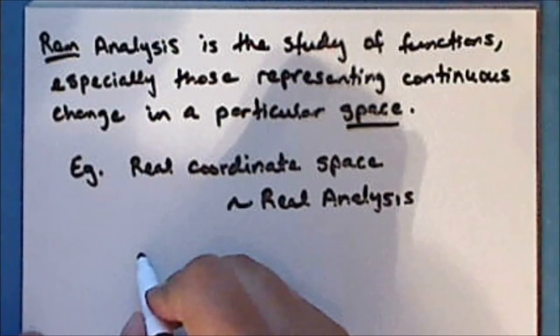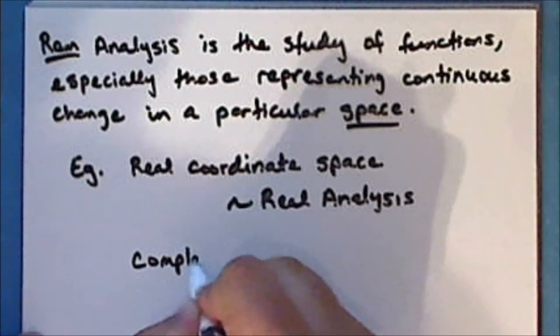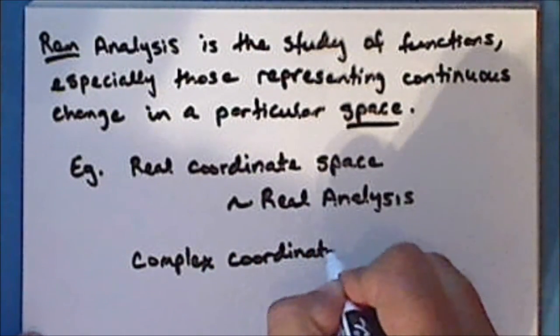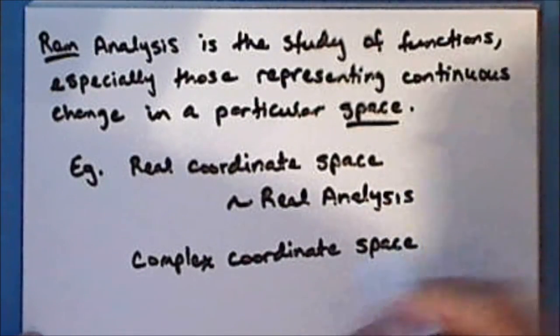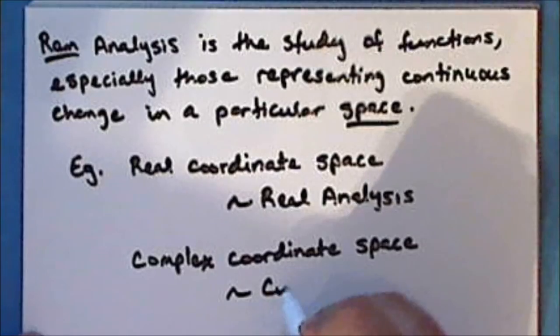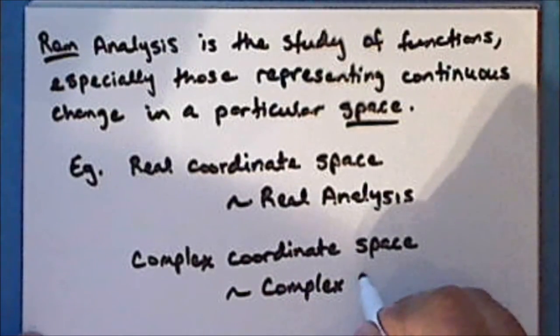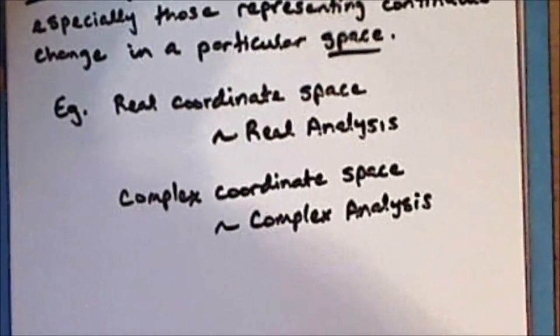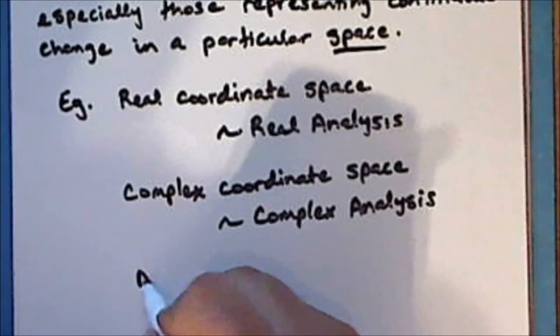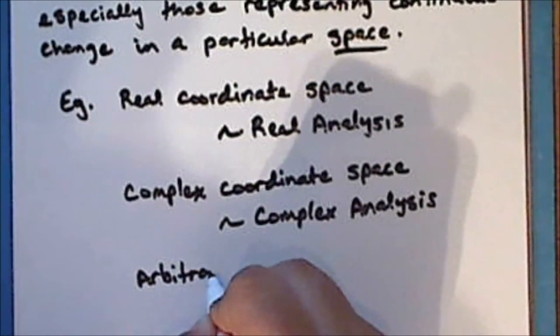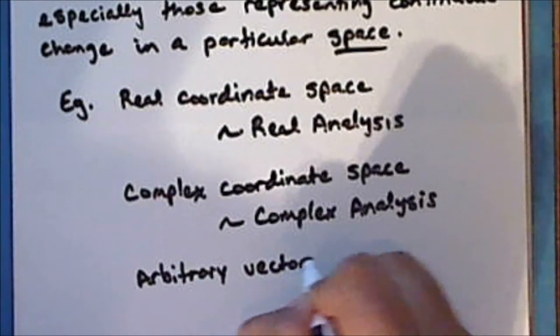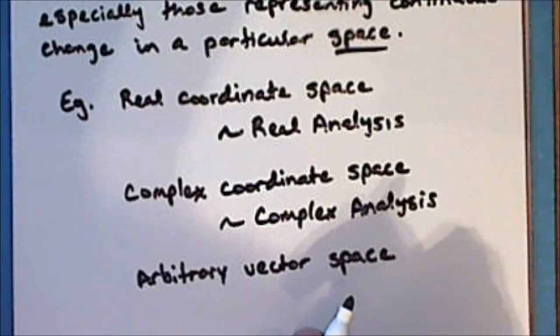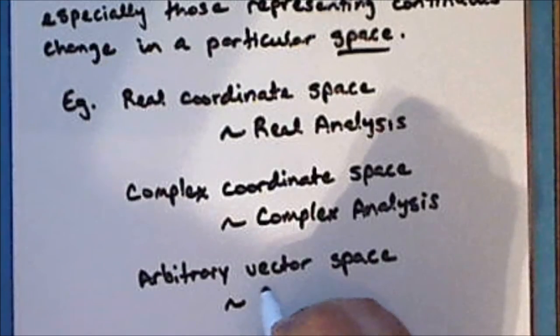The space could be a complex coordinate space, and this is the domain of complex analysis. Or the space could be an arbitrary vector space that does not necessarily coincide with any coordinate space, and this is the domain of functional analysis.